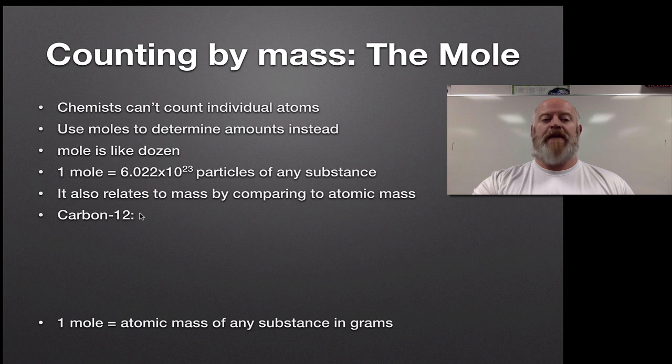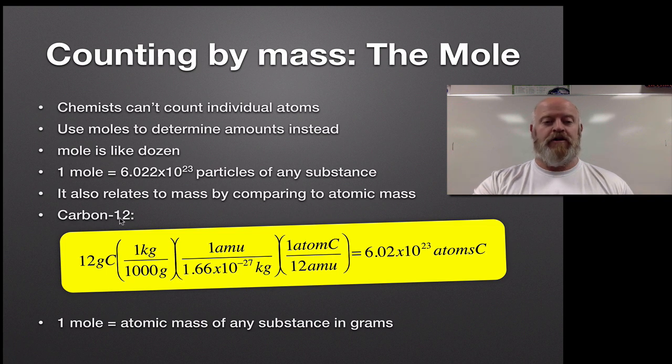So what we did is we said, well, what happens if we take carbon-12 that has 12 AMUs, and what if we use 12 grams of that. So if we had 12 grams of pure carbon-12, how many atoms would be there? So we just do a little dimensional analysis. And if you actually run the numbers, it comes out to be a very interesting number. So if you take 12 grams of carbon-12, and you convert from grams to kilograms, so 1,000 grams equals 1 kilogram, a little dimensional analysis here, and we know that 1 AMU is 1.66 times 10 to the negative 27 kilograms, because that's basically the mass of a proton or a neutron. So this is the mass of a single proton or a single neutron. So we convert from kilograms to AMUs, and then we convert, well, with carbon-12, there's 12 AMUs for every one atom of carbon. If you break it down, for 12 grams of carbon, you get 6.022 times 10 to the 23rd atoms.